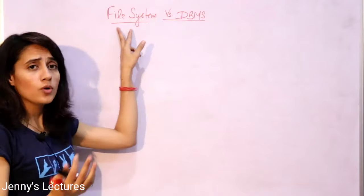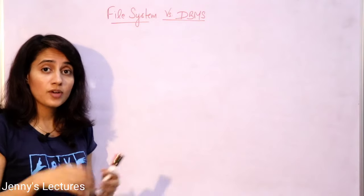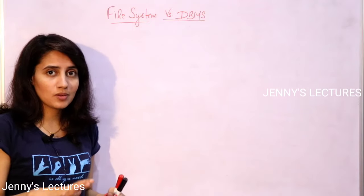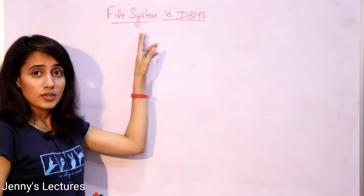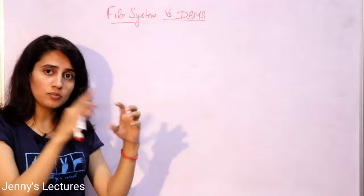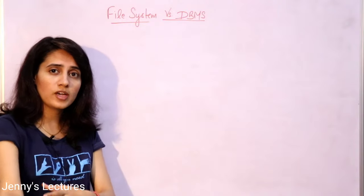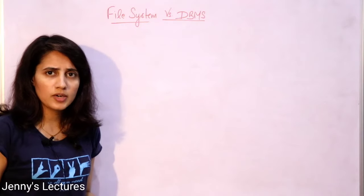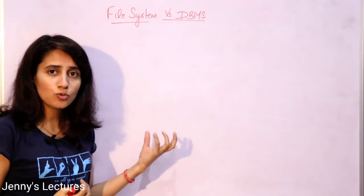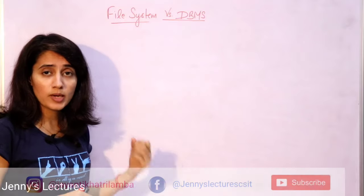First of all, what is a file system? If you are using a computer, then you are definitely using a file system. The file system comes with your operating system, and we don't even know that we are using it or how it works. It is going to manage the files and data we store. In the system, we have drives like C, D, or E, and within those we have folders, subfolders, and files — maybe a Notepad file, WordPad file, or Excel file. Managing this data is the role of the file system. Both DBMS and file system are used to manage data.